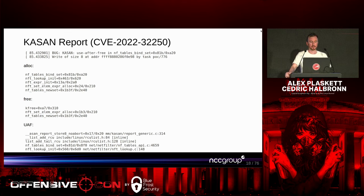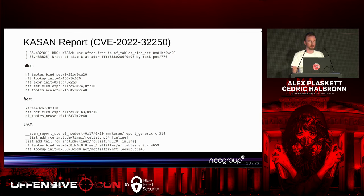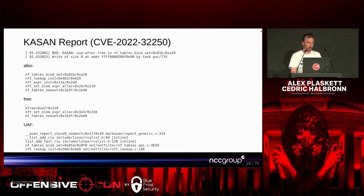This issue exhibited itself in the KASAN output as a use-after-free in nftables bind_set — specifically a use-after-free write of 8 bytes to a freed chunk. Triaging it, we looked at the alloc and could see it was calling nftables new_set to create a new set, then allocating an expression, then freeing the expression. The use-after-free part was calling nftables bind_set and performing a list_add_tail_rcu — adding something to the tail of a linked list. We suspected this was a dangling pointer within the list of sets.